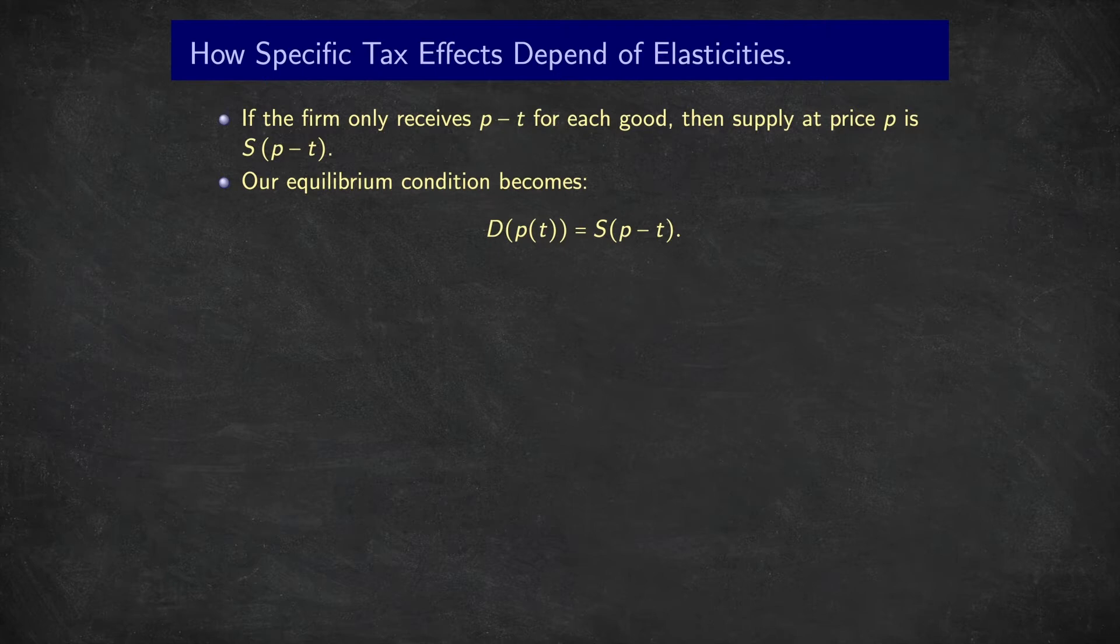So our equilibrium condition changes. Now, once we introduce this tax, the price that currently exists in the market may no longer be in equilibrium and will only be in equilibrium if the demand equals supply taking into account this tax. So demand, which is a function of price, which may be affected by this tax, will equal the supply from the firm who received the price but have to pay the tax. So this is our condition for an equilibrium. Let's move over to paper now and analyze this in more detail to see what we can say about it.